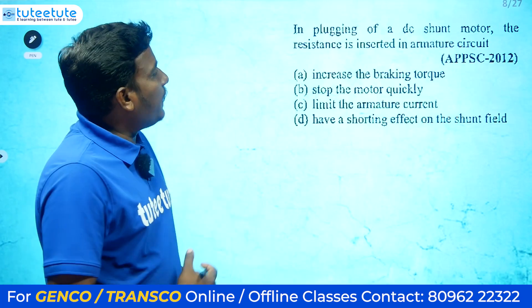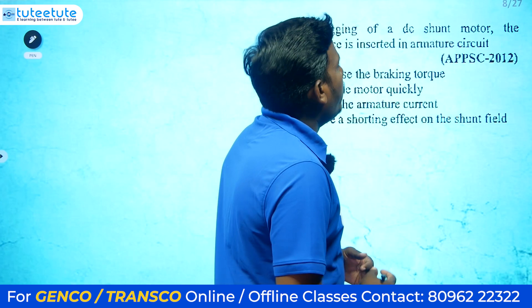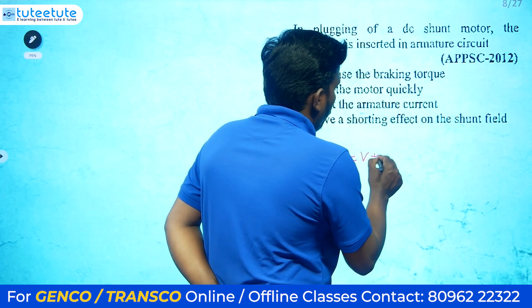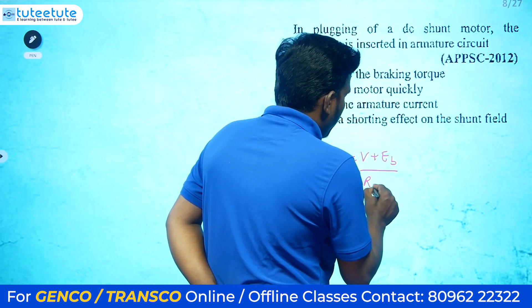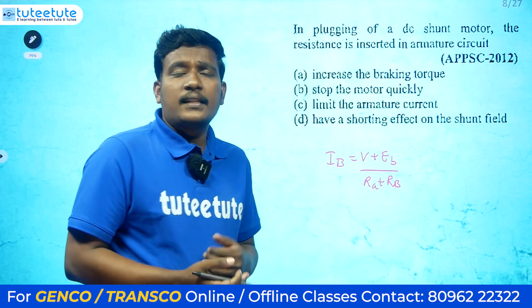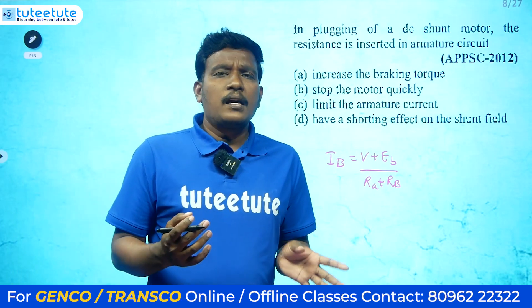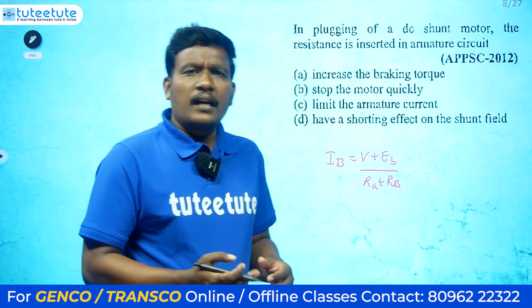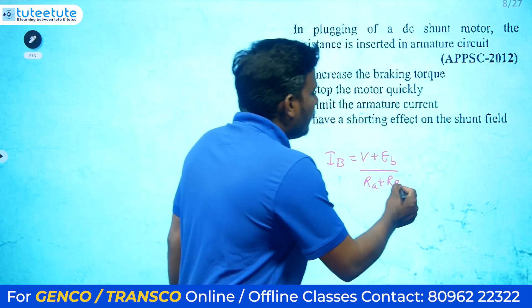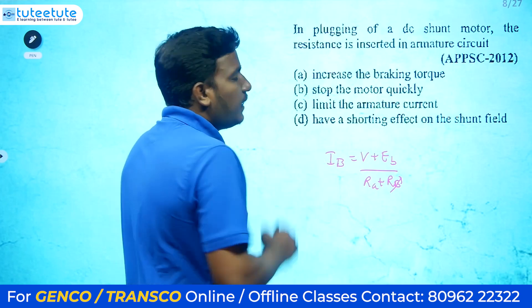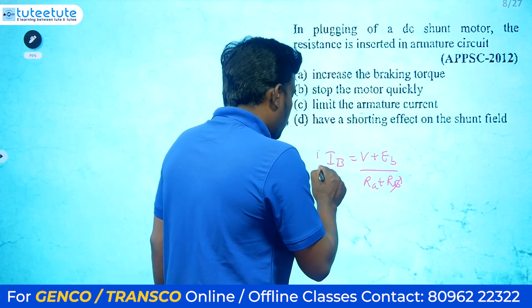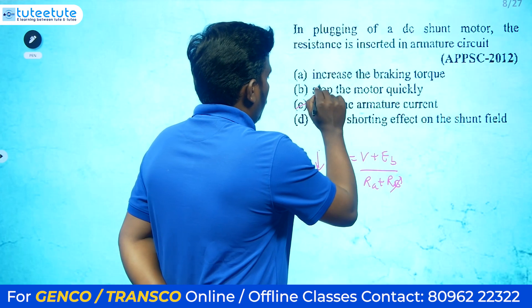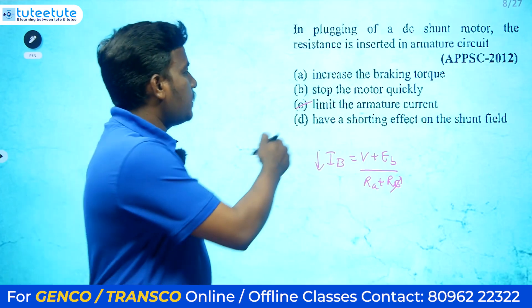Next question: during plugging of a DC shunt motor, resistance is inserted in the armature circuit. During plugging, the braking current Ib = (V + Eb) / (Ra + Rb). Plugging means we interchange the armature terminals and connect to supply, causing very high current. To limit this current, Rb is connected. The purpose of Rb is to reduce or limit the braking current. The suitable option is C.